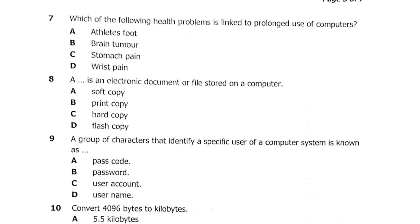Question 7: which of the following health problems is linked to prolonged use of computers? Is it A: athlete's foot, B: brain tumor, C: stomach pain, or D: wrist pain? When you are typing for long periods, you literally bend your wrist, so the health problem is wrist pain. The answer is D.